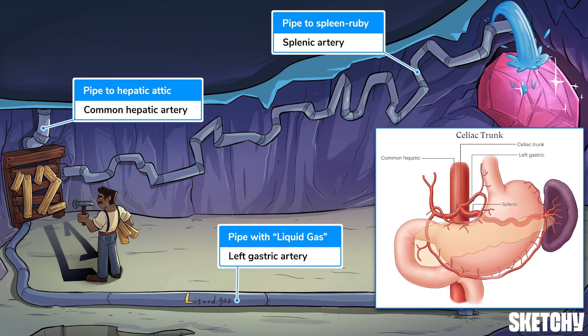These three pipes supply the structures in this cavern. These vessels and their branches are complex, and even interconnect with each other at points called anastomoses, so we'll take them on one by one, but look out for where they work cooperatively with each other.